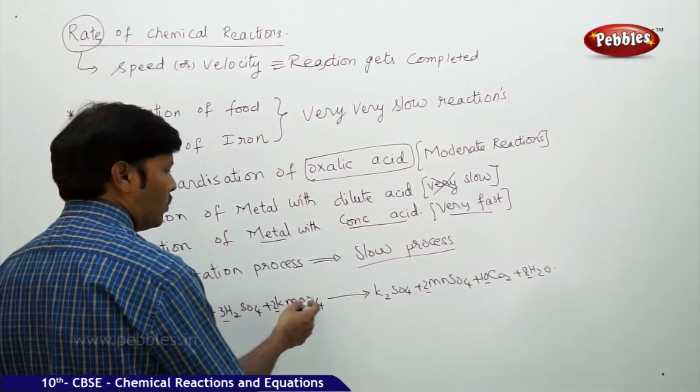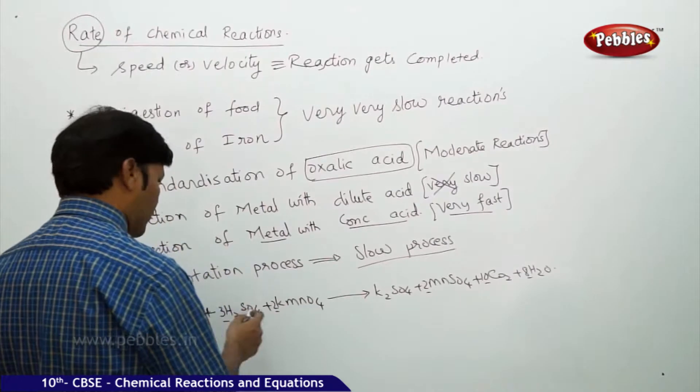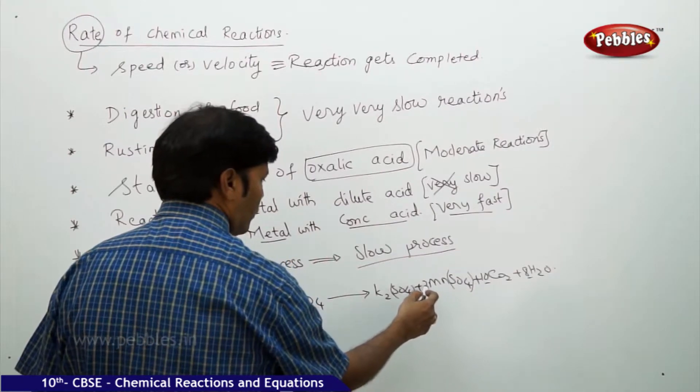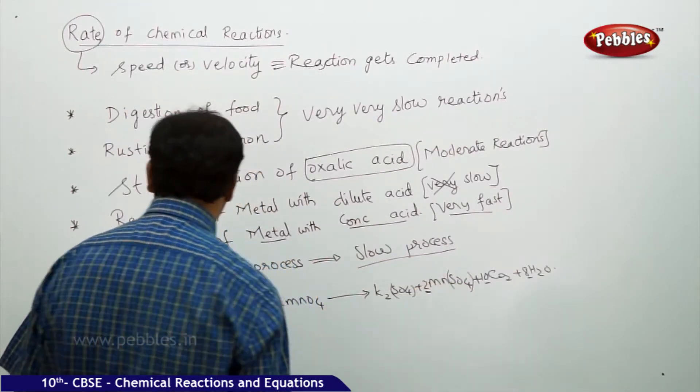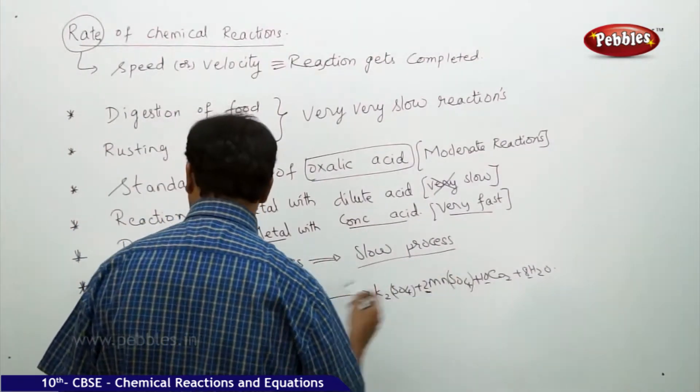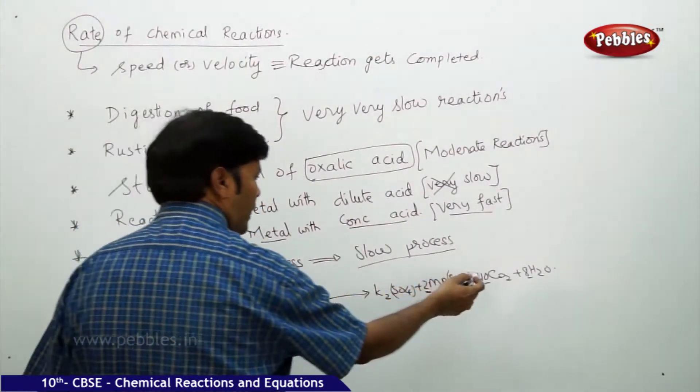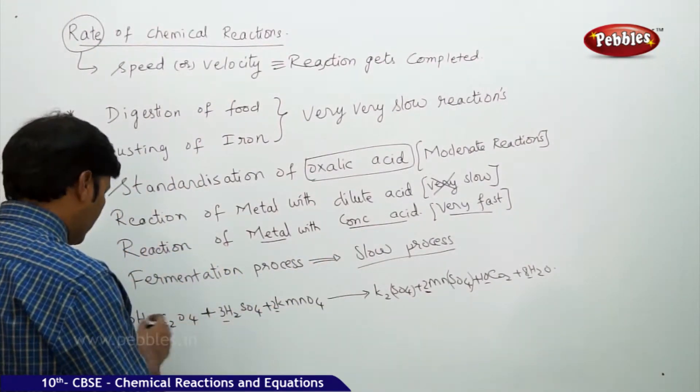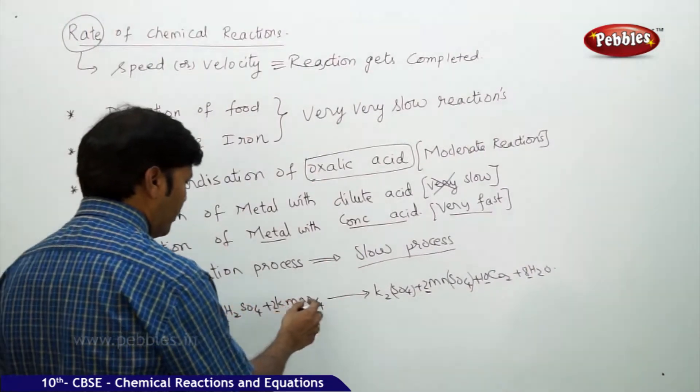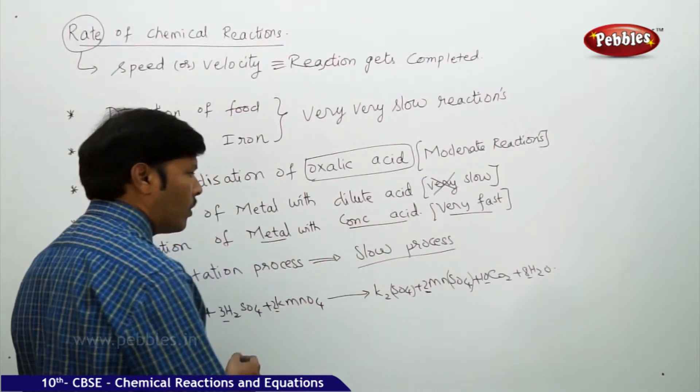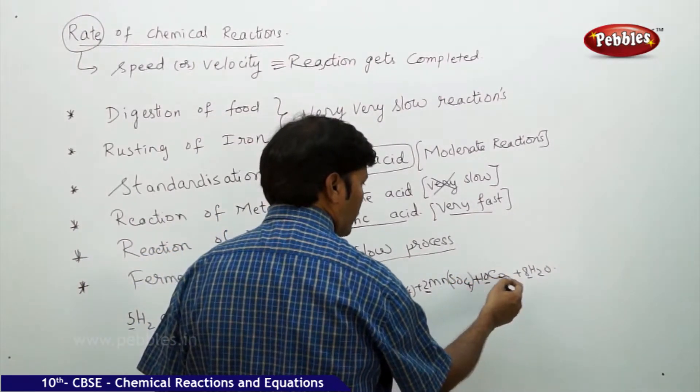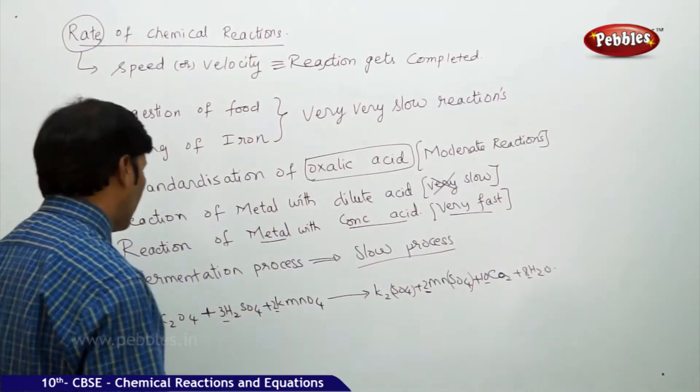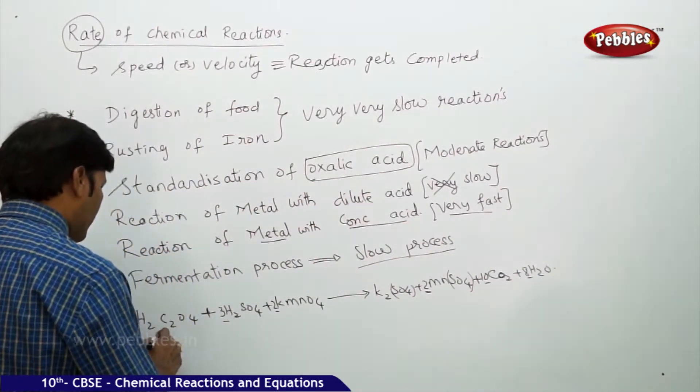I think the reaction is already balanced because we have 2 potassium and 2 potassium, we have 2 manganese and 2 manganese, we have 3 sulfates - 1 sulfate here and another 2 sulfates. There are 10 carbons, you have 16 hydrogens balanced. 5 for 20 oxygens - 5 for 20 and 20 plus 4, 2 for 8 oxygens, 28 oxygens. So this is 10 to 20 oxygens and another 8 oxygens. So the entire reaction is getting balanced.